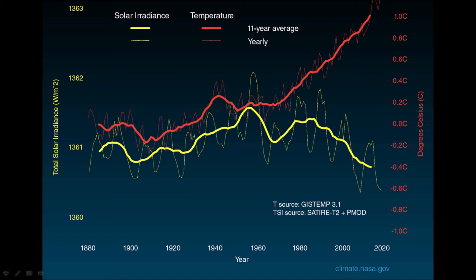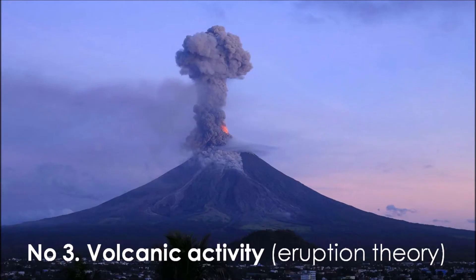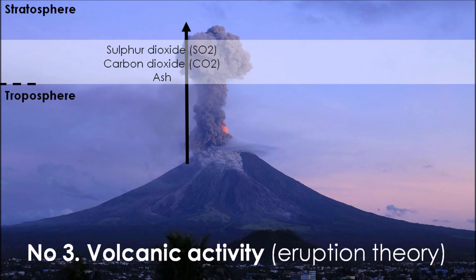The third natural cause of climate change is known as volcanic activity or eruption theory. This is where we have volcanic eruptions producing that ash, that sulfur dioxide gas, which is released into the atmosphere. It will go past the troposphere into the stratosphere, one of the higher levels of the atmosphere. And any particles and any gases will be circulated and picked up by those high-level winds and circulated around the Earth.